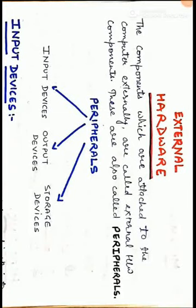Hello everyone, I hope you all are fine. Myself Ankit. This is the second video for Class 7th, subject Computer, Chapter Number 1: Computer Hardware Components. So we all know that the physical components of a computer which we can touch and see are known as computer hardware, and there are two categories: internal hardware and external hardware. In the previous video I discussed internal hardware in detail, so today I am going to discuss the second category, that is external hardware.